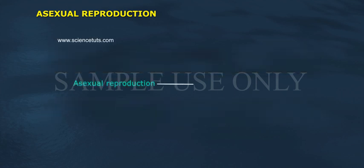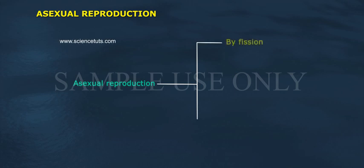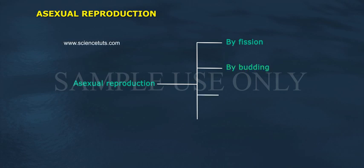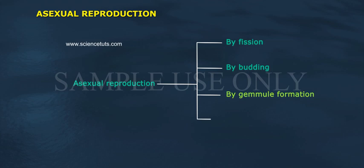Asexual reproduction is of the following types: 1. By fission, 2. By budding, 3. By gemmule formation, 4. By regeneration.